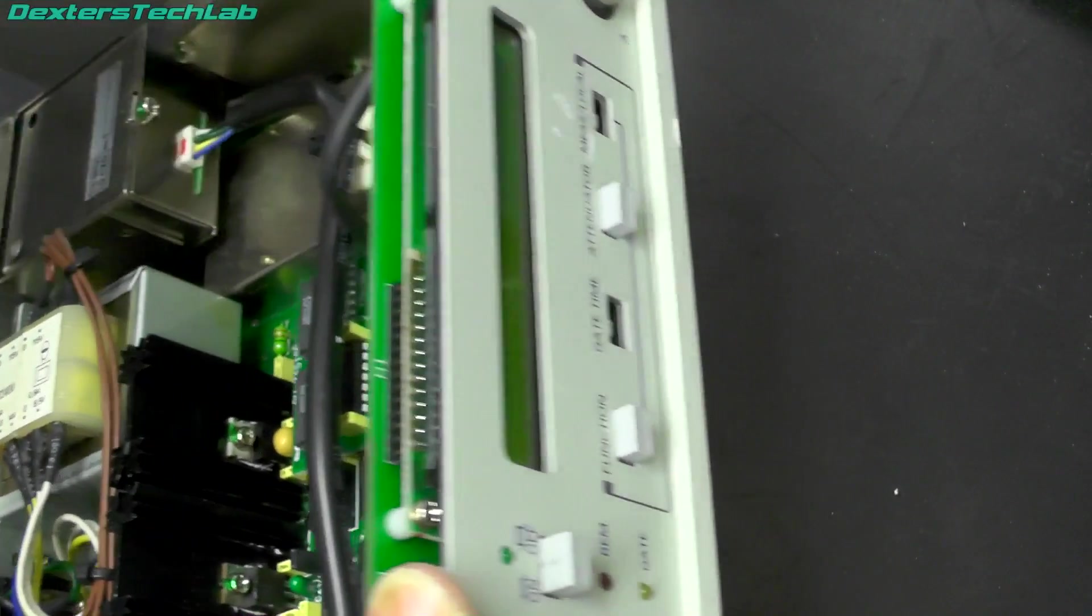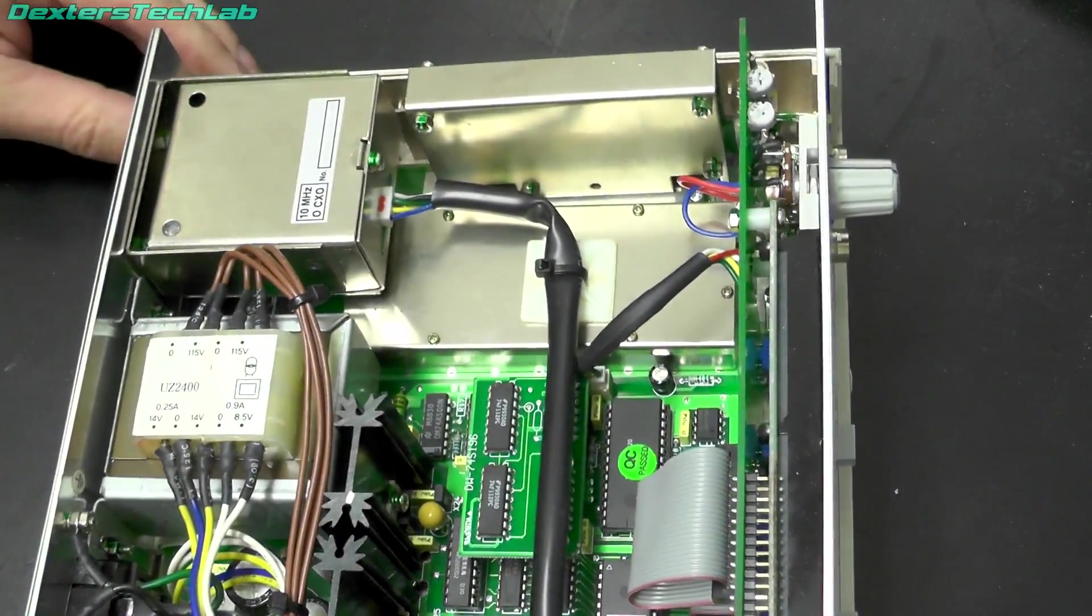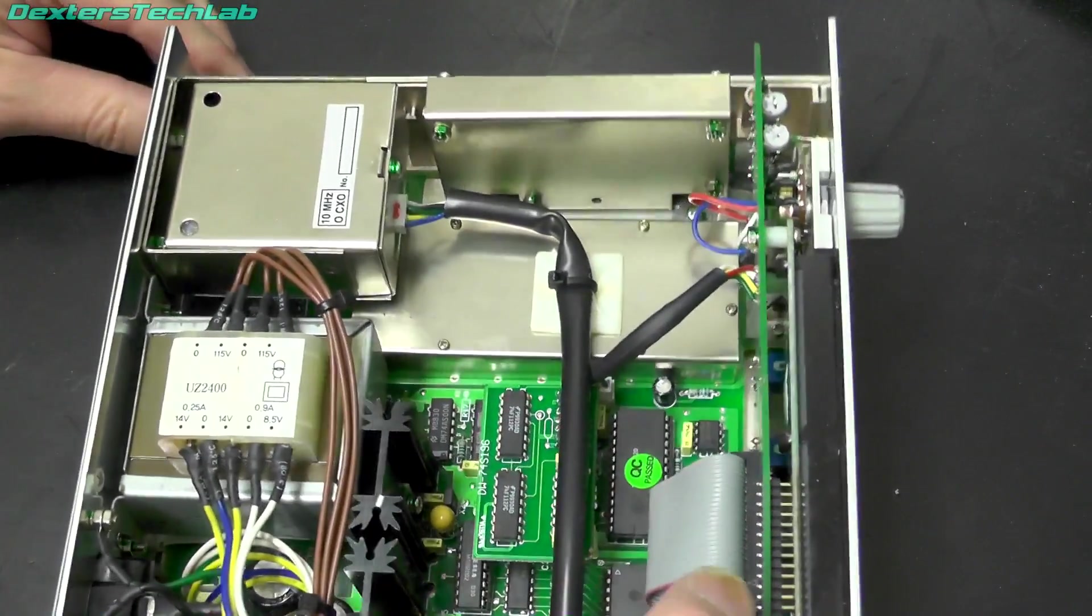Couple of shielding cans just there. One for channel A and one for channel C. I don't know what's happened to channel B. Maybe it's gone missing.